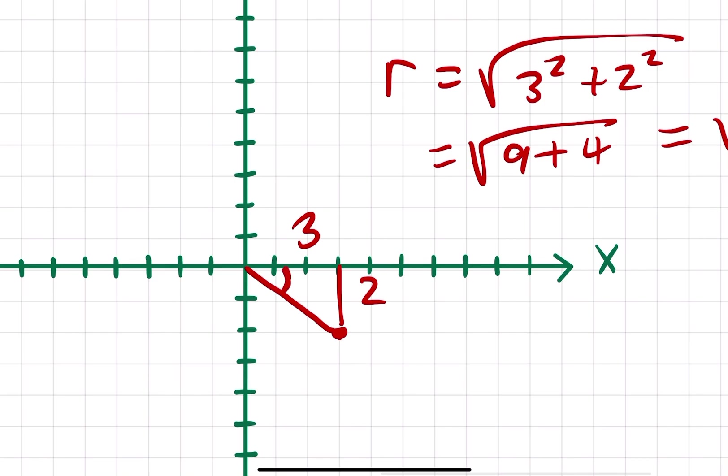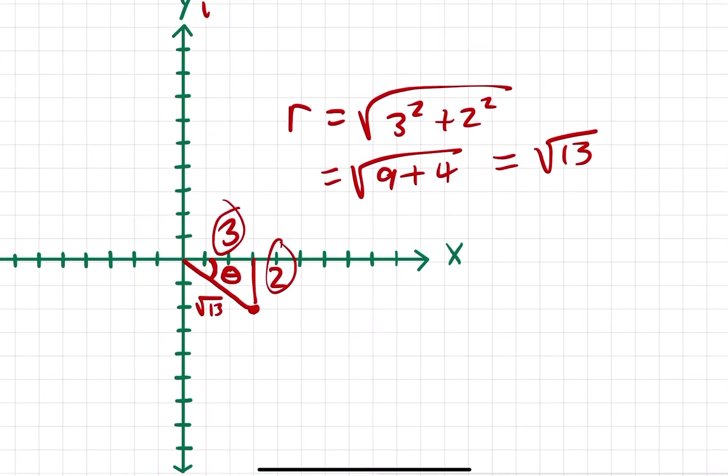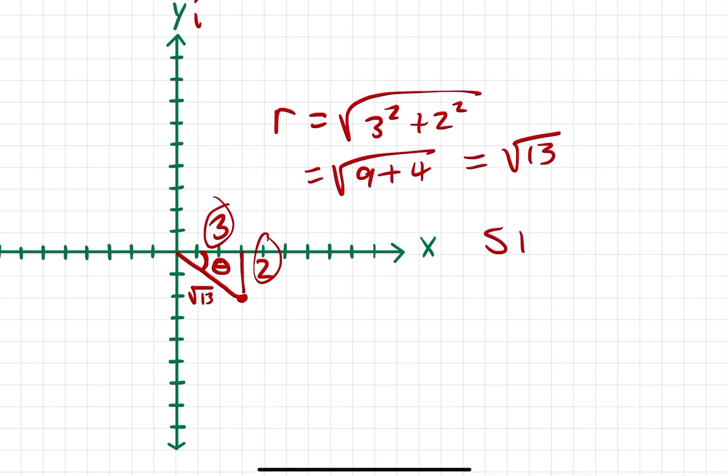Polar form is z equals r times (cosine theta plus i sine theta). The way that you get theta is this angle right here. We don't want to deal with the radical, so we use these two legs. Because this is a right triangle, we can use SOHCAHTOA. We're going to stick to tangent because we can just use the legs. Tangent theta equals the opposite leg over the adjacent leg, which is negative 2 over 3.